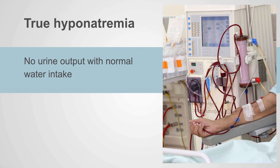The first scenario happens with dialysis or end-stage renal disease. Anything which prevents the patient from making urine predisposes them to hyponatremia, as they're naturally going to drink more water than they can excrete.